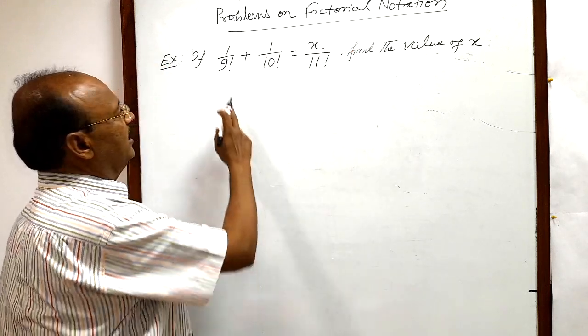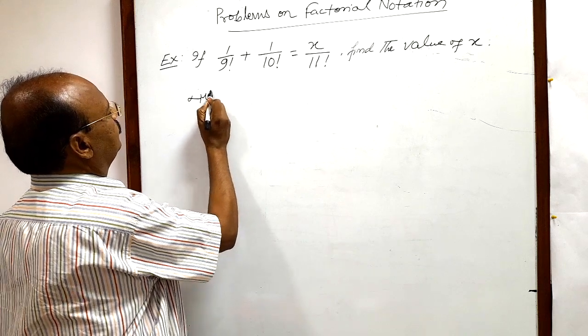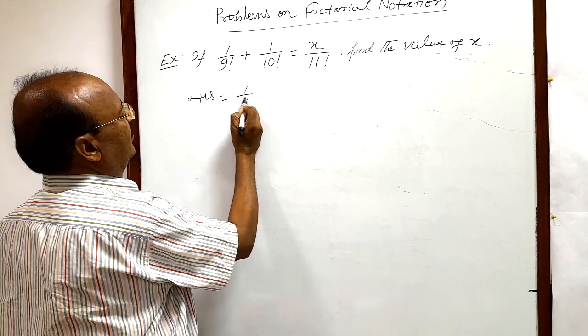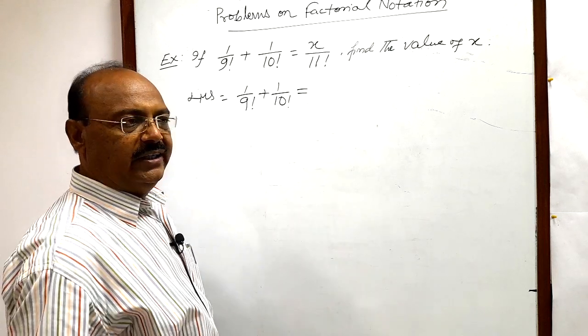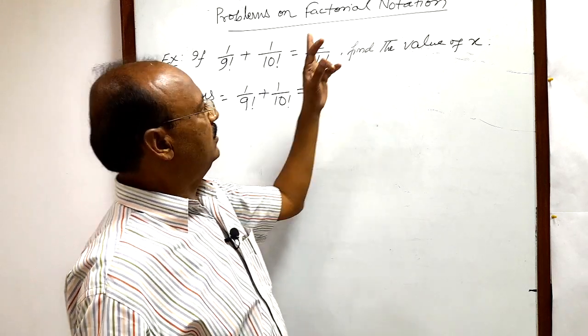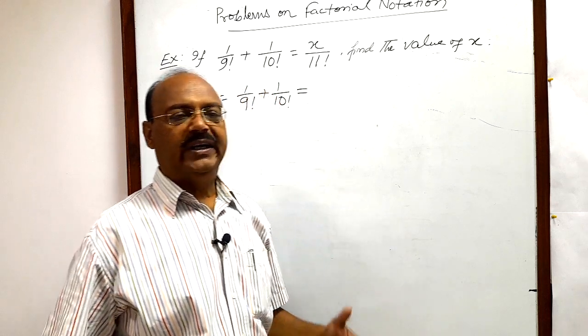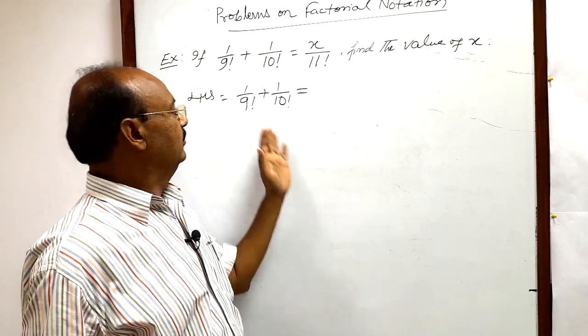So you see here left hand side is how much, this is 1 by 9 factorial plus 1 by 10 factorial, and we have already discussed in the beginning of this topic factorial notation that how we can understand, how we can define factorials.